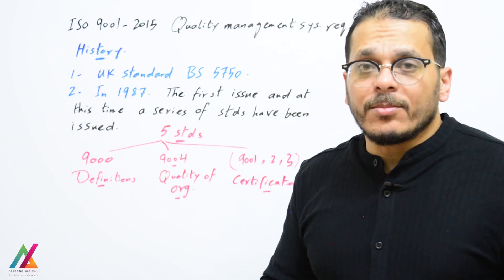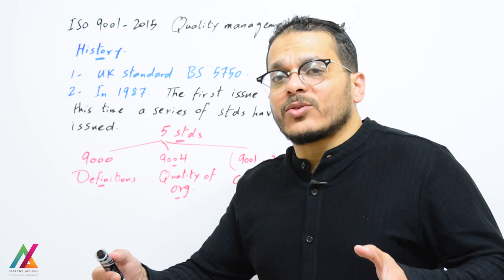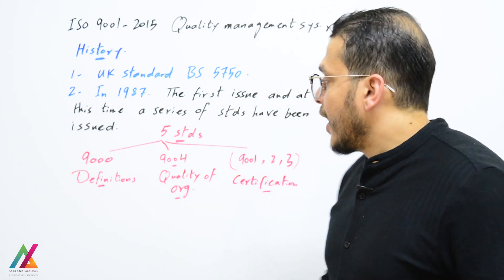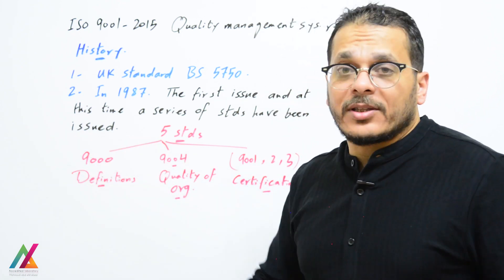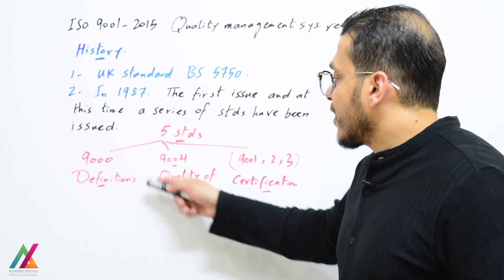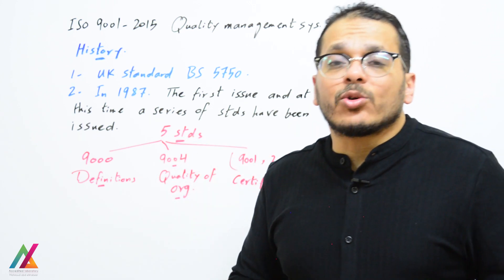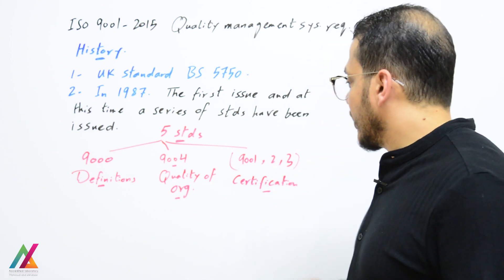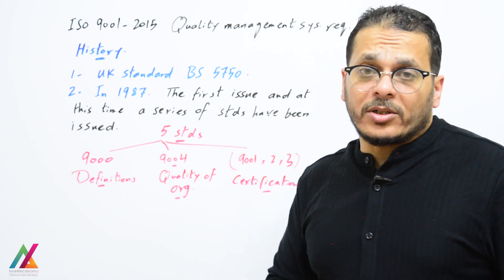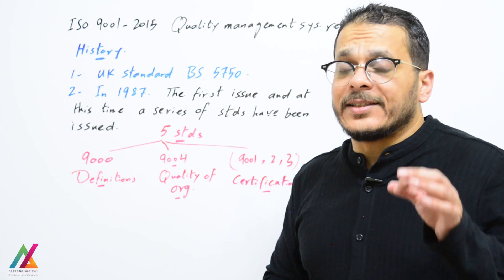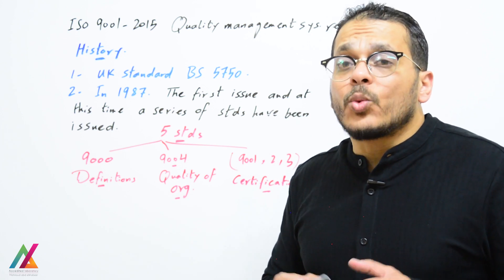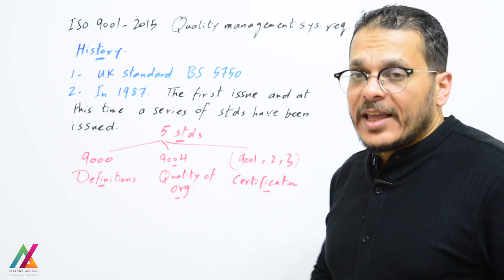During this time, a series of 9000 standards were issued. ISO 9000 was for definitions, and 9004 was for quality of organization, which was optional. ISO 9001, 9002, and 9003 were for certification.